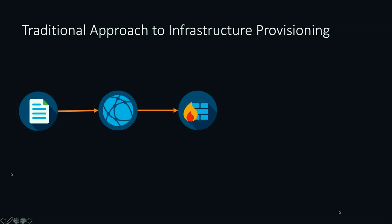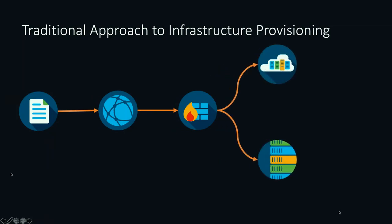Likely there's a firewall — if we have security in place, we might have to update some rules. And then in this world of hybrid cloud, there's a good chance you might also have to provision some components in the public cloud as well as in your own private cloud — likely on some virtualized or even bare metal server infrastructure. And all this gets us to our base application.